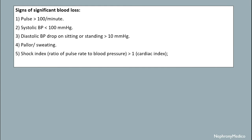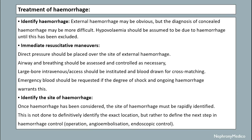Signs of significant blood loss: pulse more than 100 per minute, systolic blood pressure less than 100 mmHg, diastolic blood pressure drop on sitting and standing more than 10 mmHg, pallor or sweating, and shock index more than one.